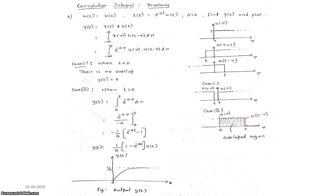For infinite signals, there are generally two cases. In case one, when t is less than 0: considering values of t less than 0, when multiplying the two signals you can observe there is no overlap. u(t minus tau) is positioned to the left of 0, and u(tau) has value 1 only for tau greater than or equal to 0. So there is no overlap. When there is no overlap, the multiplication of the two signals gives an output of 0.